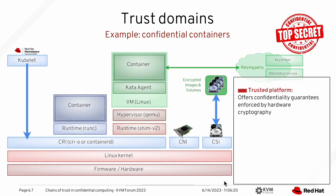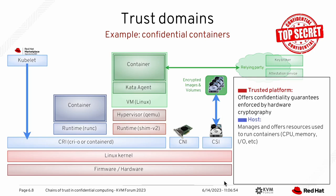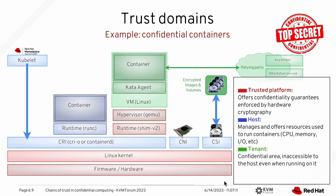If we want to do something like that for more advanced workloads — taking Kata Containers as an example — we want additional levels of trust we can provide to higher levels. We need to provide a kind of trusted platform that offers confidentiality guarantees enforced by hardware and cryptography. The platform gives you the tools, but you don't need to trust it beyond the fact that it does the computations correctly. The host manages physical resources like CPU and memory, but you will not have to trust that your data is visible to it. In green, you have all aspects belonging to the tenant — a confidential area, completely inaccessible to the host even while running on it.